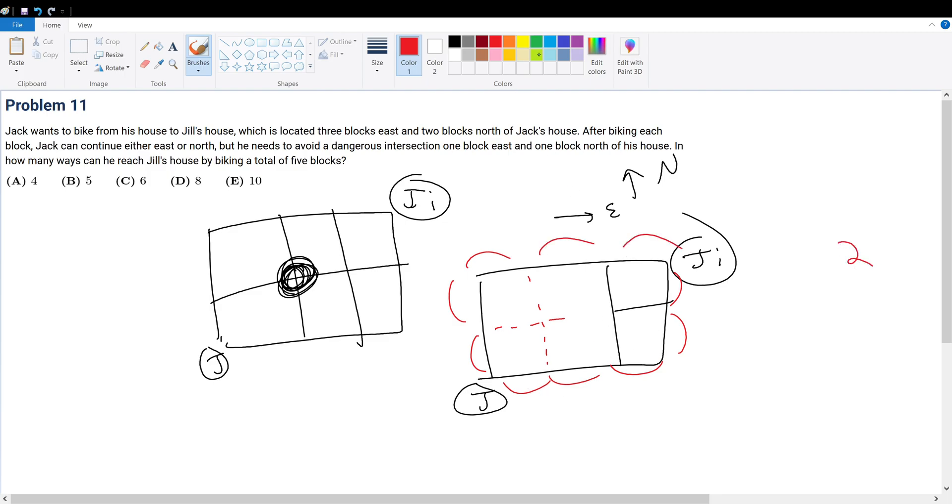But then he can do, I'll do this in green. You can do 1, 2, 3, 4, 5, and that's 3. And then he can do, I'll do this in blue. He can do 1, 2, 3, 4, 5, go up. So that's 4.